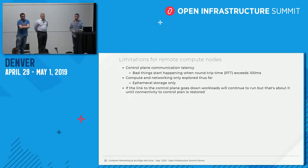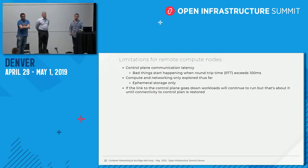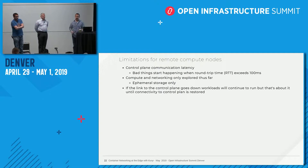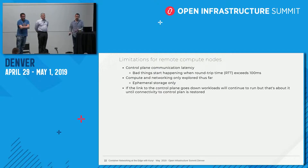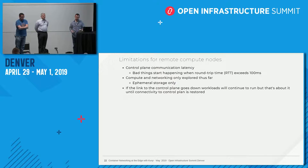My feeling is most workloads are going to be ephemeral anyway, but I could be wrong. If the link to the control plane goes down, your workloads will continue to run, but that's about it — there's no communication to OpenStack anymore. Until that link comes back up, you won't be able to do anything like shut down an instance through the APIs. It's basically on its own.